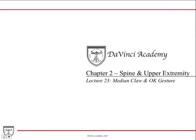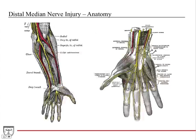This is the third and final video covering the peripheral nerve lesions table on the last page of the hand section. In this lecture we're going to talk about the median claw and the OK gesture. Just like the other videos we'll go through each individually and then at the end make a comparison to distinguish both of them. We've covered the proximal median nerve injury, so let's go into the last pair: a distal median nerve injury and a proximal ulnar nerve injury.